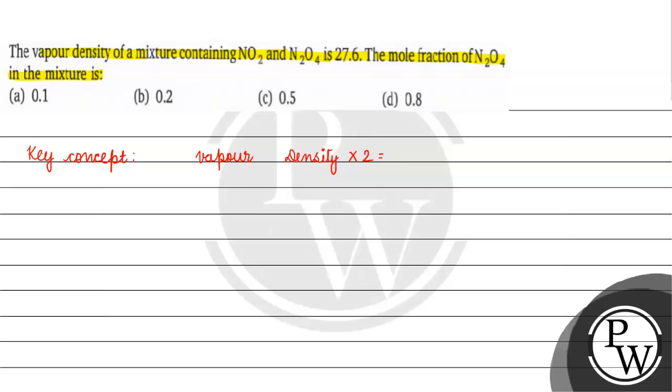Vapor density times 2 is basically equals to the molecular mass. If we talk about molecular mass of the mixture, molecular mass of the mixture will be equals to 27.6 into 2, which comes to 55.2.